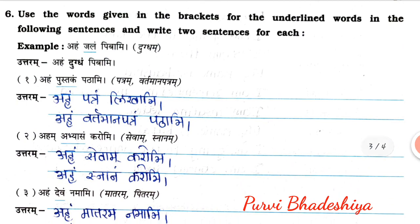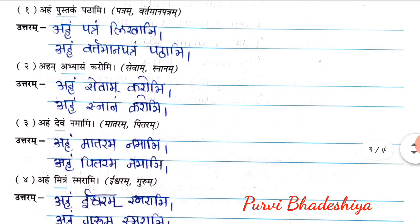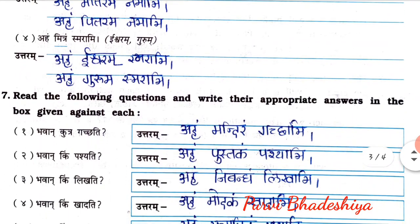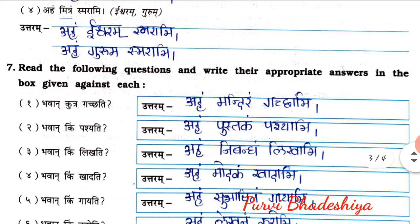Exercise number six: use the words given in the brackets for the underlined words in the sentences and write two sentences for each. For example, Aham Jalam Pibami — the word Jalam is underlined, and we replace it with the words given in the bracket. First: Aham Patram Likhami; Aham Vartman Patram Pathami. Second: Aham Shevam Karomi; Aham Snanam Karomi. Third: Aham Matram Namami; Aham Pitaram Namami. Fourth: Aham Ishwaram Smarami; Aham Guruam Smarami.